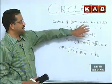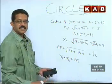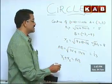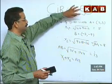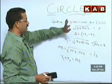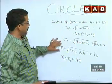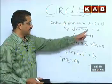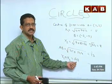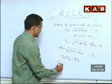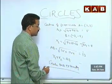Now, r1 + r2 = 5 + 8 = 13, which equals AB. Since the sum of the radii equals the distance between the centers, the circles are touching externally. Therefore, the sum of the radii equals the distance between the centers, and we conclude: the circles touch externally.